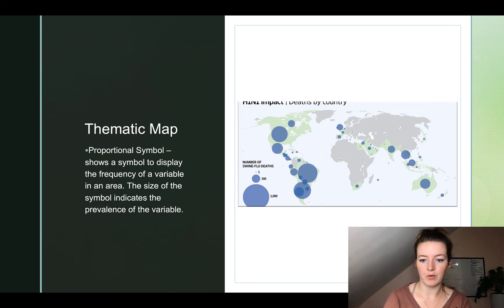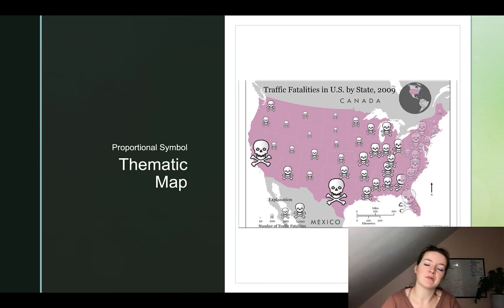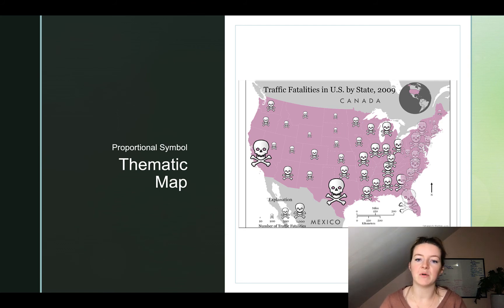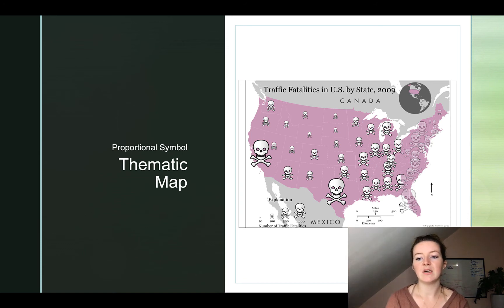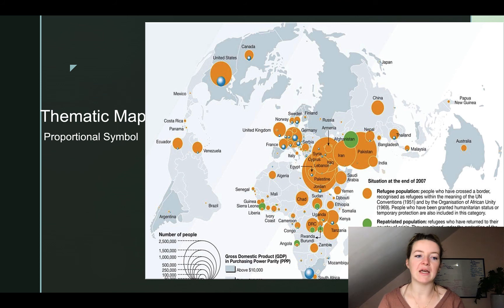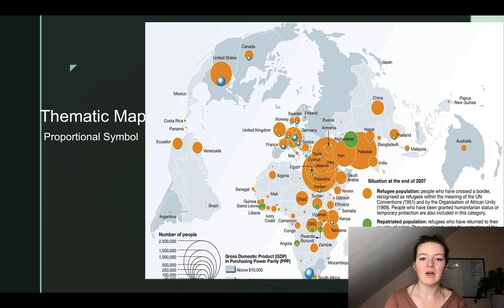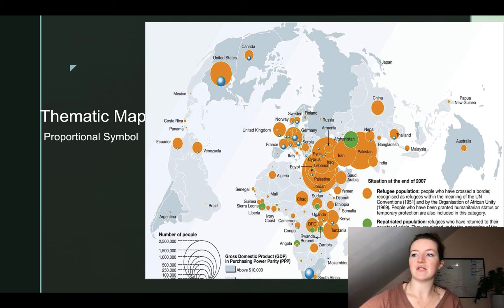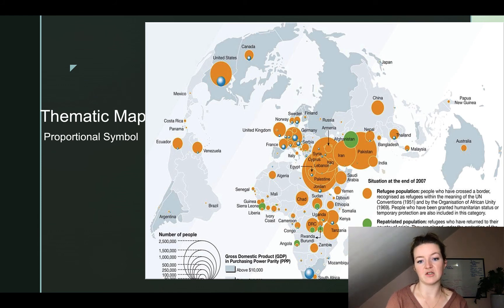Gray areas mean we don't have any data. A proportional symbol does not have to be a circle, although it usually is. Here we're looking at traffic fatalities in the United States by state in 2009 — the largest skulls represent the most traffic fatalities. Sometimes a thematic map, even though it's only showing one variable, can really show a few different ones in one. Here we're looking at refugees — a person displaced from their home country because of persecution, war, or a natural disaster. It's not safe for them to live there anymore.